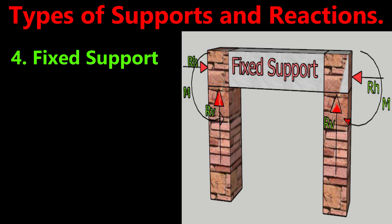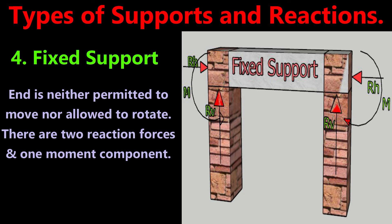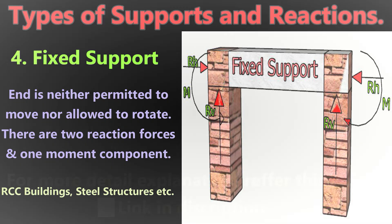The next type of support is fixed support. At a fixed support, the end of the beam is neither permitted to move in any direction nor allowed to rotate. Hence the support reactions are a force in any direction resisting movement, represented by its components in two mutually perpendicular directions. Therefore, there are two reaction forces and one moment in the case of fixed support. This end condition may be achieved by taking the end of the beam considerably inside the support. These types of supports are most commonly used in RCC buildings, steel structures, etc.